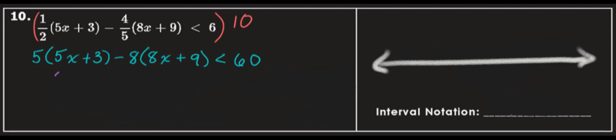Distribute. Distribute again. Combine like terms. 25x minus 64x is negative 39x. 15 plus 72 is positive 87 less than or equal to 60.